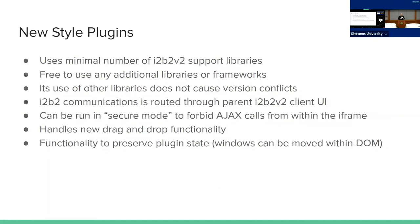For new-style plugins, you're minimizing the number of I2b2 support libraries down to three or four, one of which you need — the other three are injected automatically just by including that one main library. You're not going to have any version conflicts with libraries. All communication using those libraries goes through the standard backend channel, which will be set up with logging analysis, error reporting, etc. As we build the new I2b2 client and get more robust functionality, the new-style I2b2 plugins will be able to fully utilize all that technology as it comes online.